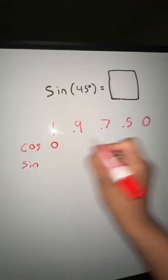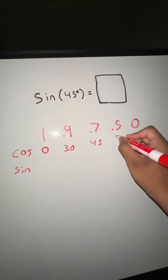Cosine, I start with cosine because you go 0 to 90. So you go 0, 30, 45, 60, and 90.